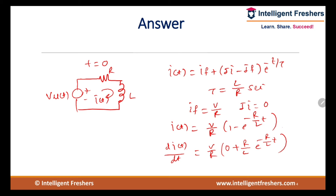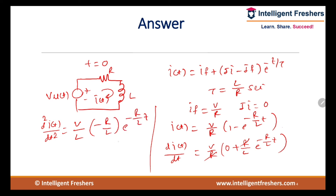We wish to find d²i/dt². Taking the derivative, d²i/dt² = (V/L) · (−R/L) · e raised to minus R/L · t. At t = 0+, using the property of the inductor — that it opposes sudden change in current — we get d²i/dt² = −VR/L². So option D is correct.